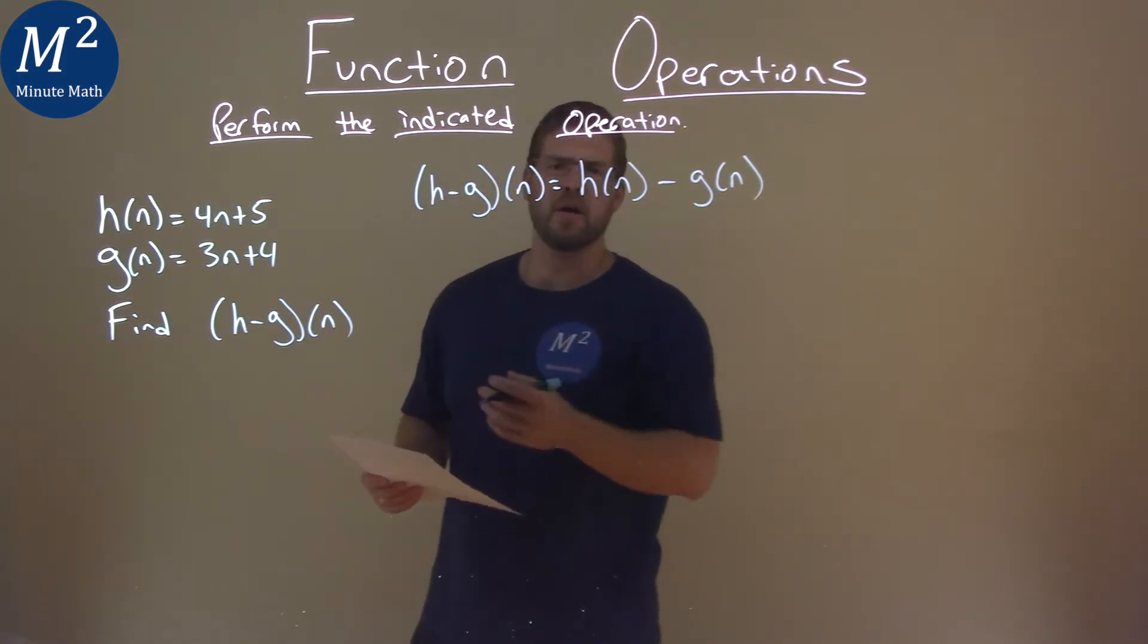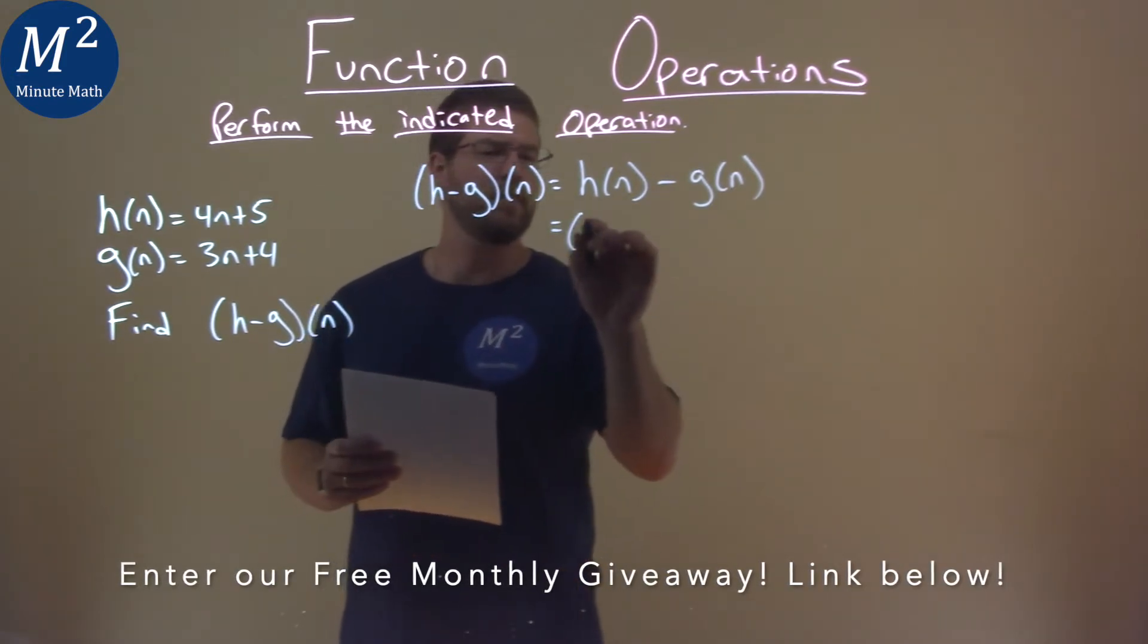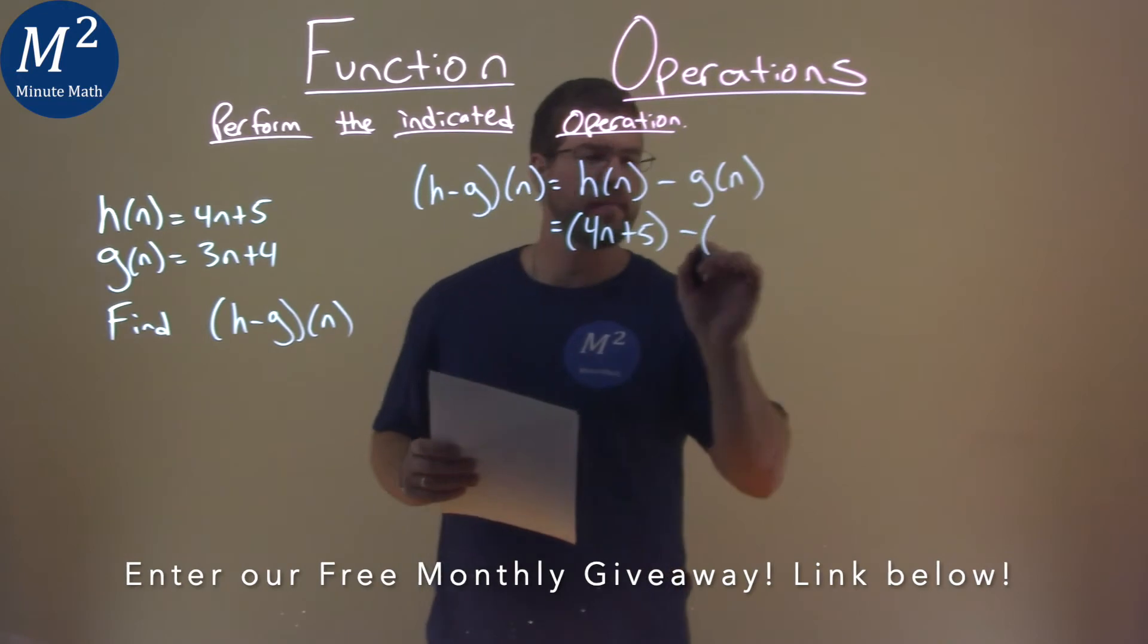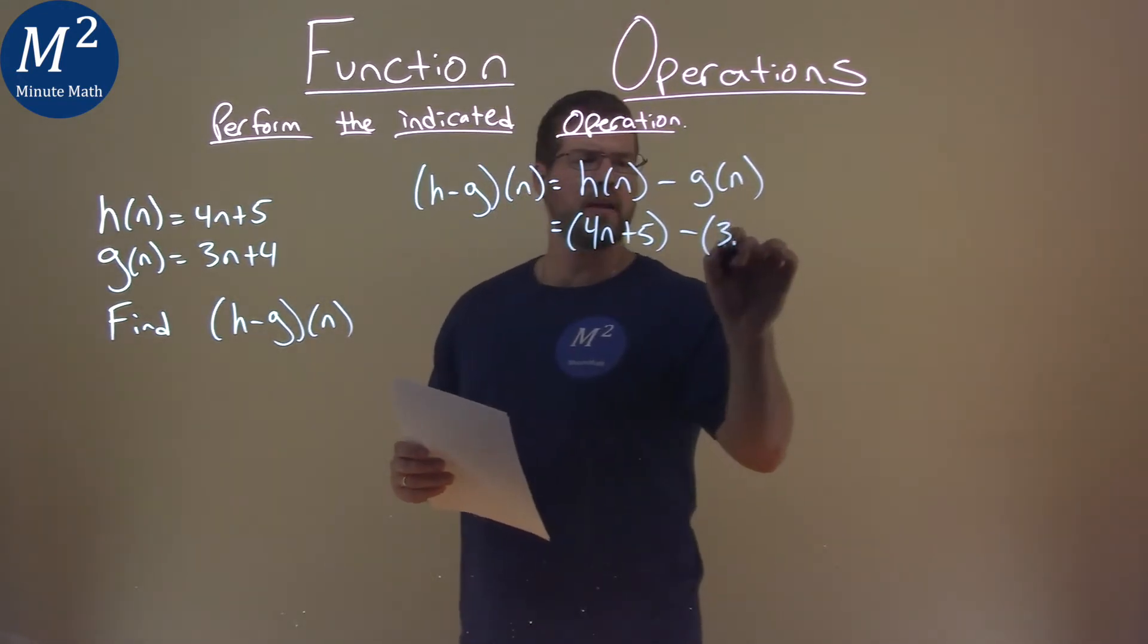Well, we know what they are. We were given that in the beginning. h of n is 4n plus 5, so we plug that in. Subtraction here, now we put it in parentheses, g of n. 3n plus 4.